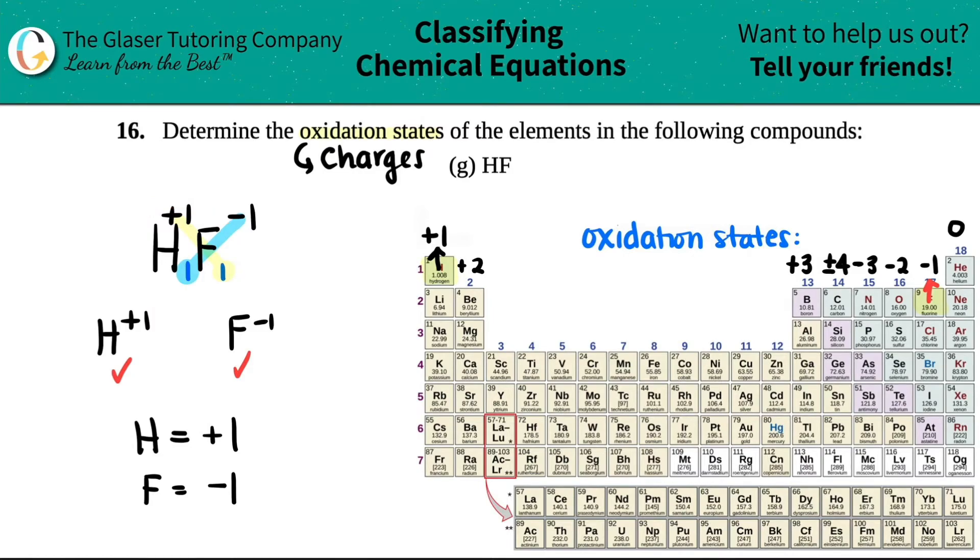Fluorine, on the other hand, being negative one, gained the one electron. How did fluorine gain the one electron? Well, the one electron was from hydrogen and it went to fluorine.